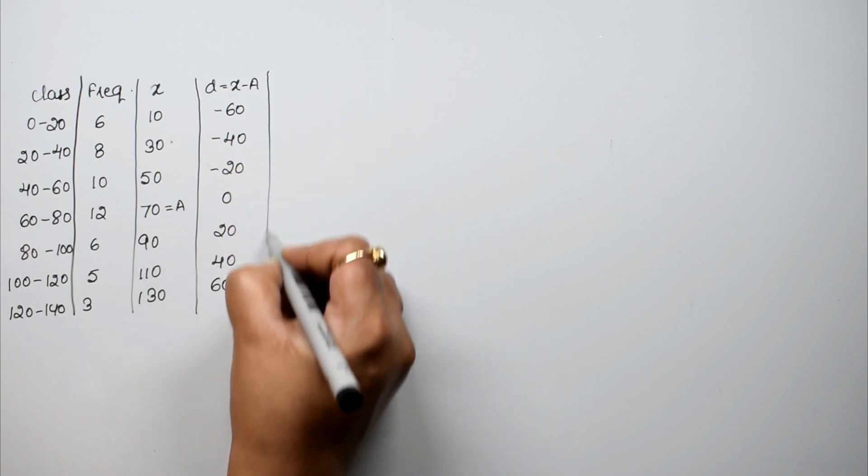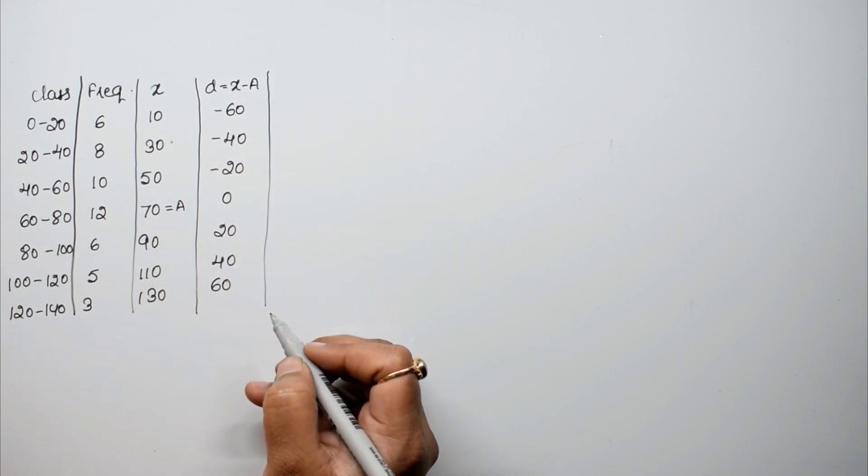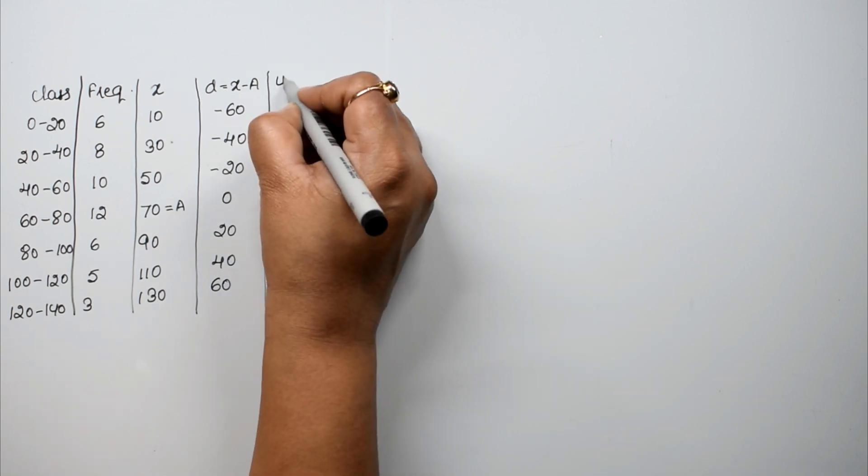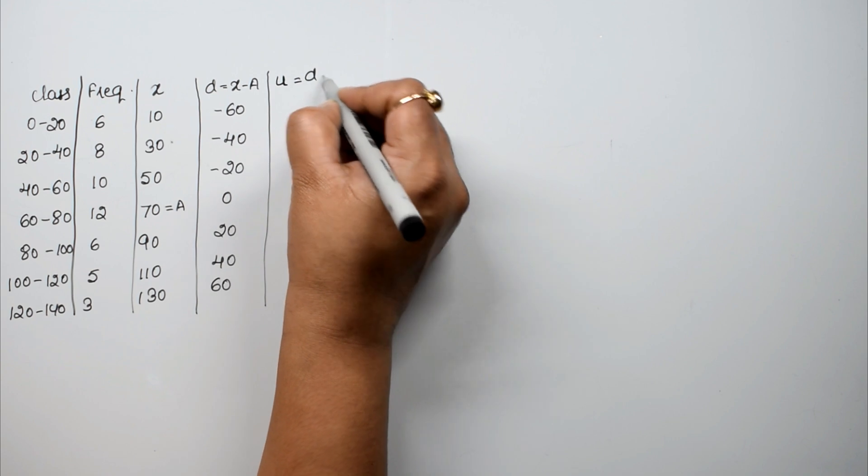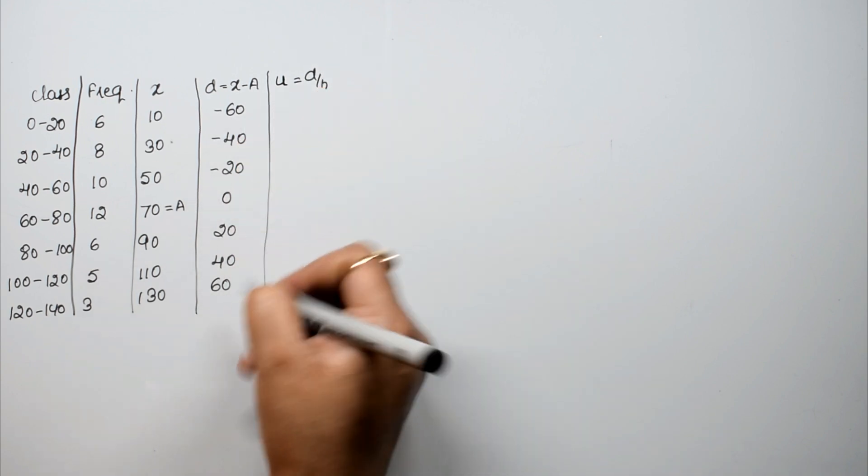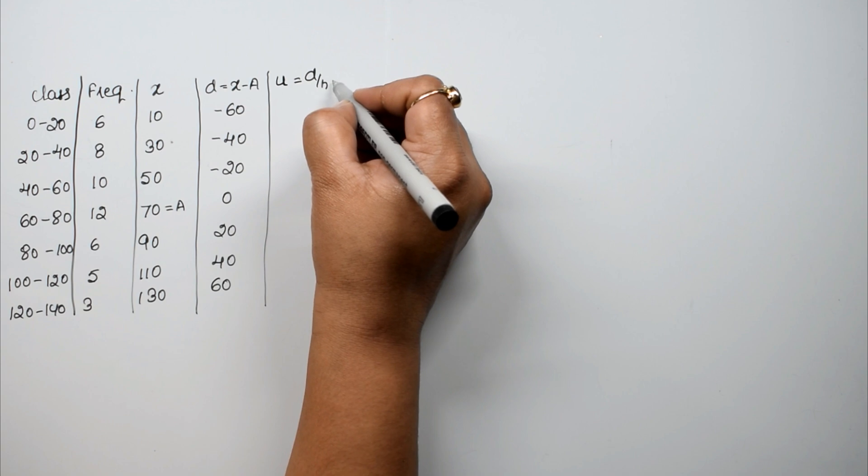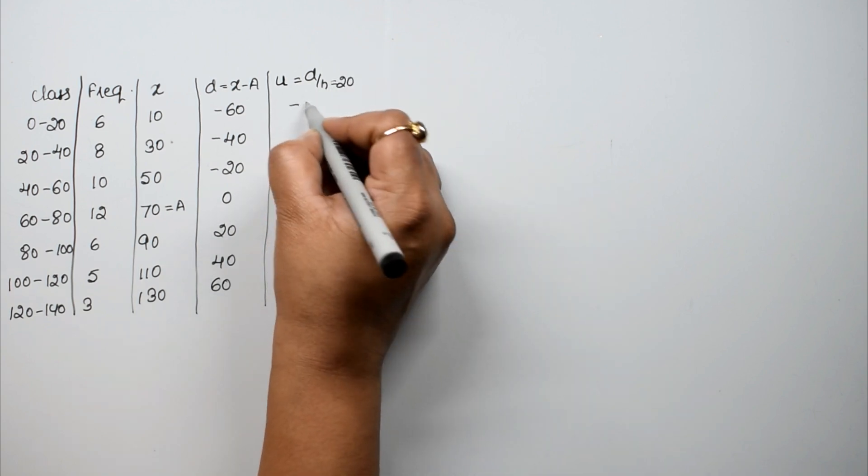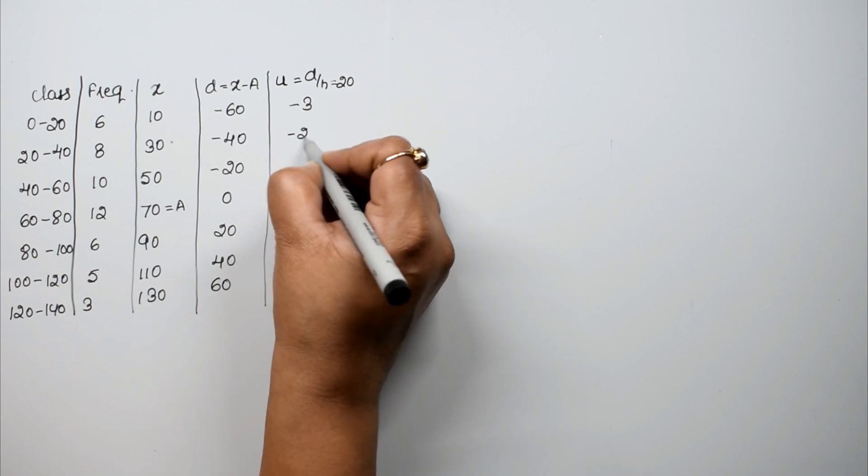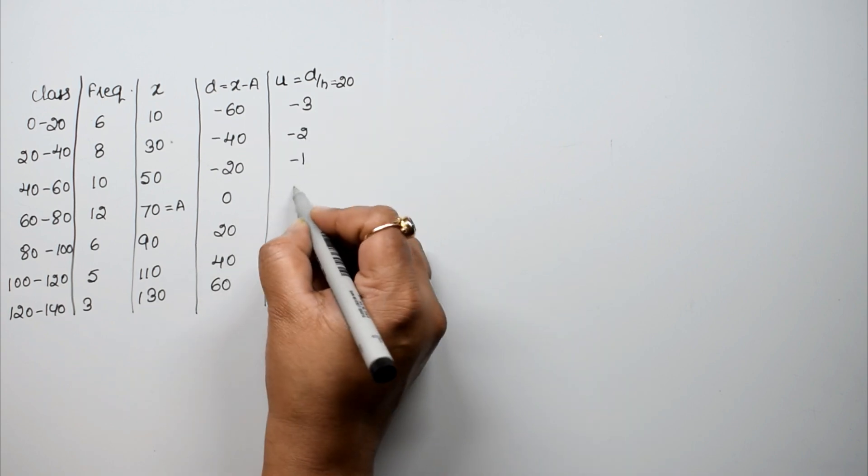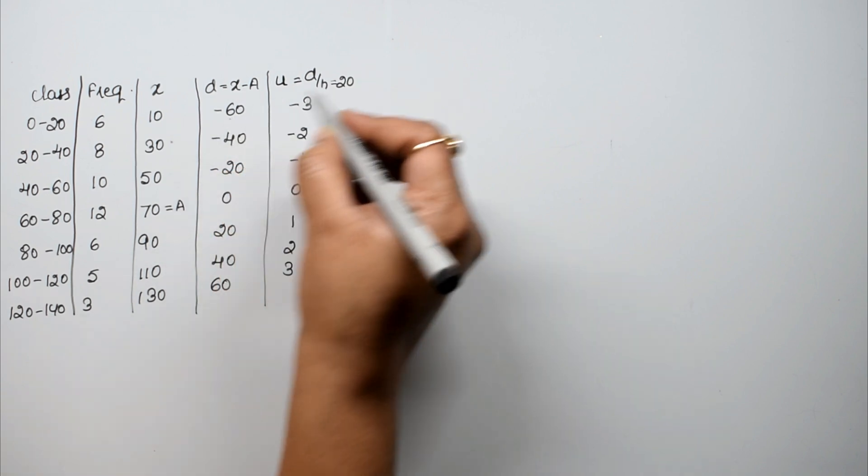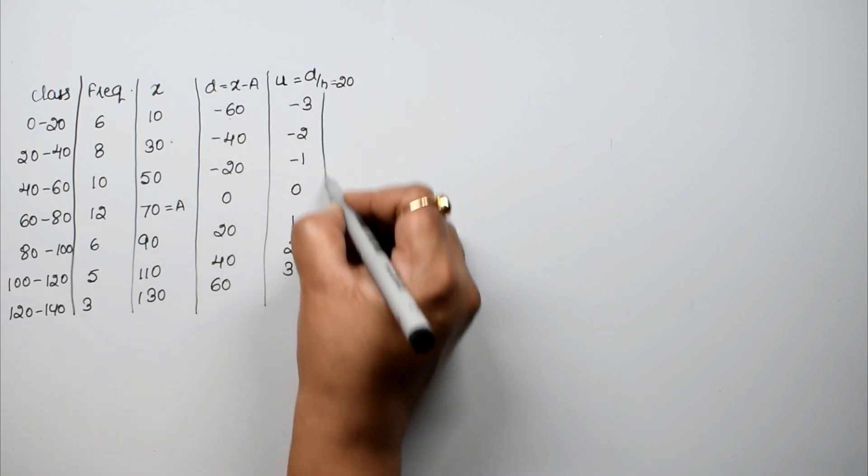Now we have to do step deviation method. Or do direct method. Or do assumed mean. It depends on our own. So we have to do u. u is like to do d upon h. h is common. That is 20 is our h. How much is it? Minus 3, minus 2, minus 1, 0, 1, 2, 3. This means I divide this from 20.